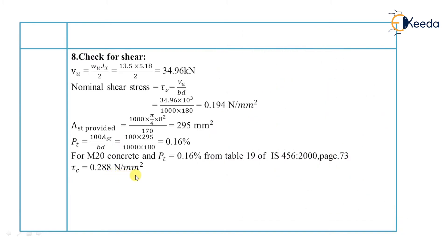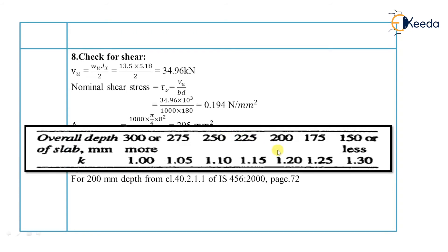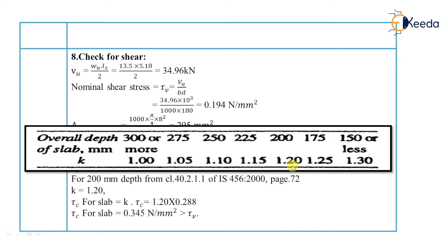For a slab, we multiply Tau C by the factor K. From IS456 Clause 40.2.1.1 (page 72), for an overall depth of 200 mm, K equals 1.2. Therefore, Tau C for slab = K × Tau C = 1.2 × 0.288 = 0.345 N per mm². Since Tau C for slab (0.345) is greater than the nominal shear stress (0.194 N per mm²), the slab is safe in shear.